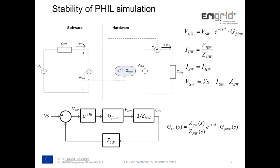Why do we need PHIL for power system analysis and testing? This method supports the development of prototypes and innovative technologies. It combines the advantages of simulation and hardware testing. Lab-based investigations are closer to PHIL testing, supporting the validation of simulation results. This approach can even show interactions not visible in digital simulation. Field testing can be de-risked, though PHIL needs a relatively high implementation effort and accuracy must be proven.